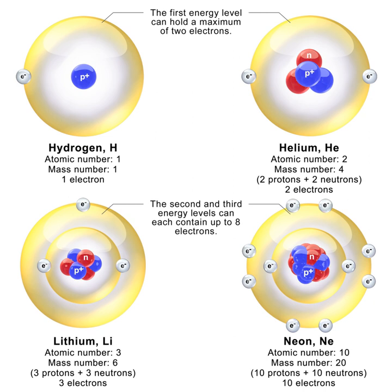Since this derivation assumes the nucleus is orbited by one electron, we can generalize by letting the nucleus have charge q = Ze, where Z is the atomic number. This gives energy levels for hydrogenic atoms, which serve as a rough order-of-magnitude approximation. So for nuclei with Z protons, the energy levels are approximately E_n = −Z² R_e / n². The actual energy levels cannot be solved analytically for more than one electron, because the electrons are not only affected by the nucleus but also interact with each other via the Coulomb force.